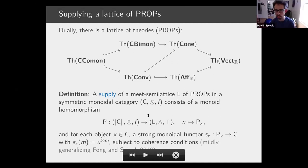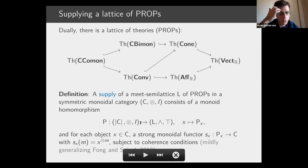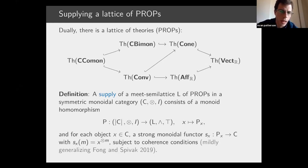A follow-up question clarifies: when you say something is a vector space object, you mean that in the supply you're assigning the theory of vector spaces — that prop — to that object, so it has that structure. The speaker confirms: exactly.